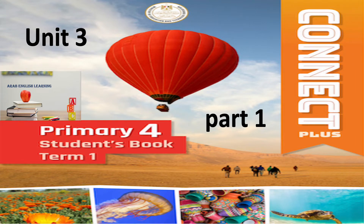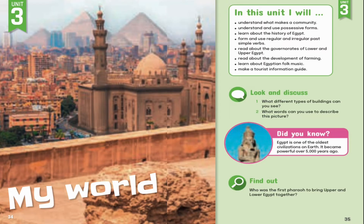Connect Plus Primary for Students Book, Unit 3, Part 1: My World. In this unit, I will understand what makes a community, understand and use possessive forms, learn about the history of Egypt, form and use regular and irregular past simple verbs, read about the governorates of Lower and Upper Egypt, read about the development of farming, learn about Egyptian folk music, and make a tourist information guide.